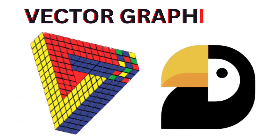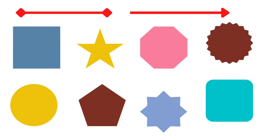But vector graphics are not like this, because they are geometrically based. Images are made by lines or shapes. And when we expand or contract vector graphics, the lines and colors are easily adjusted, so the quality of the image remains the same.